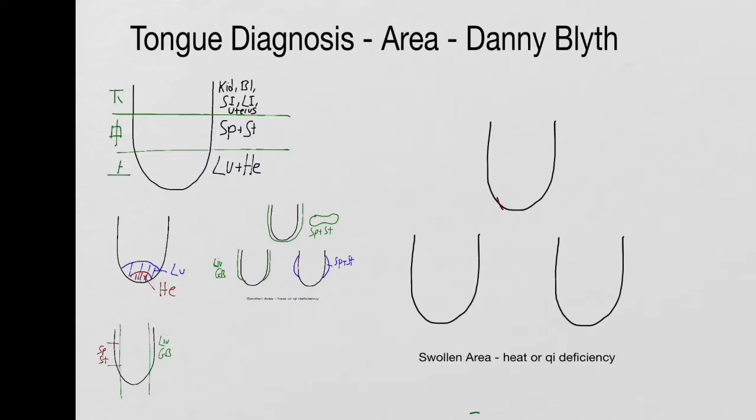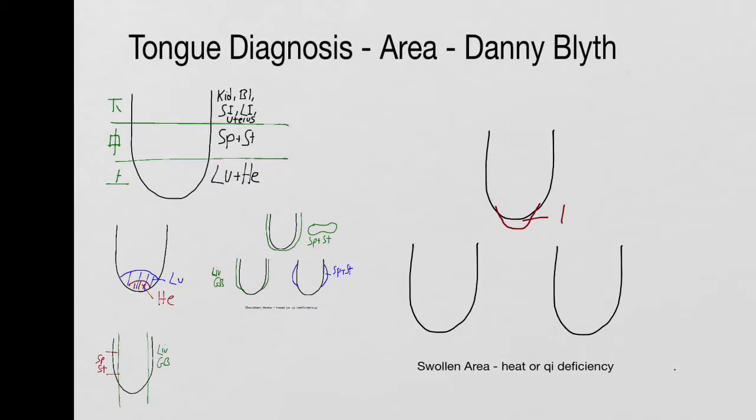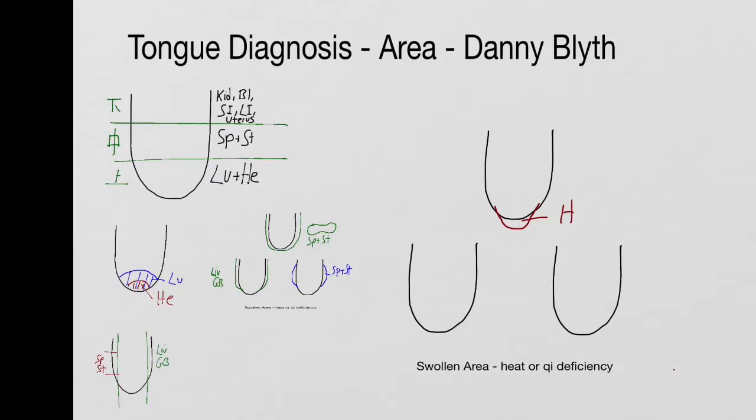If the tip is swollen, it often comes along with a long tongue. That's the heart, heart chi deficiency if it's pale or heart heat if it's red.